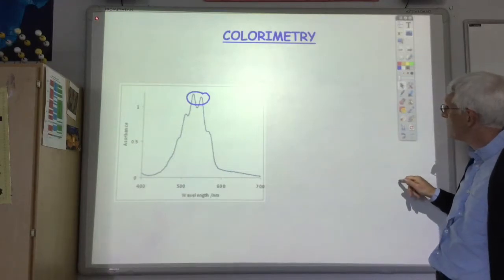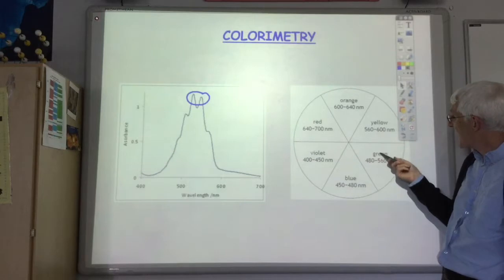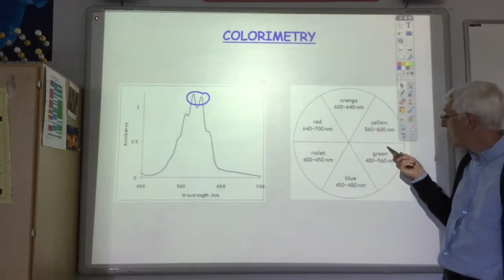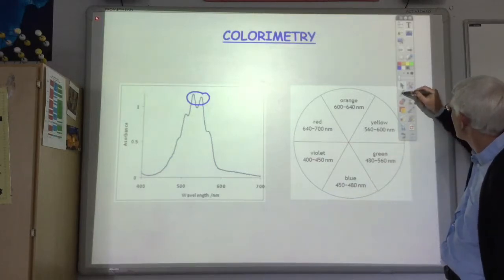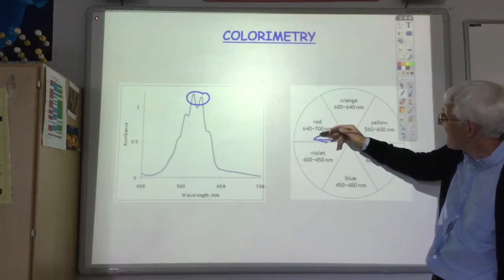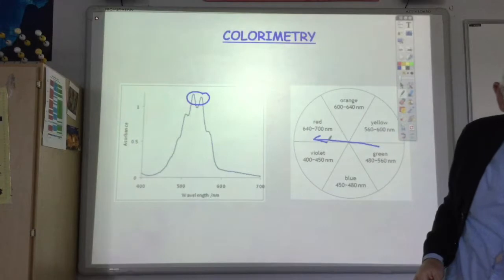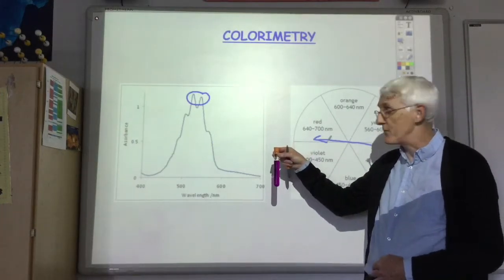If you look at the color wheel, we see that that lies at the yellow end of the green, which means that the complementary color would be at the violet end of the red, in other words, purple. And permanganate has this very distinctive purple color.